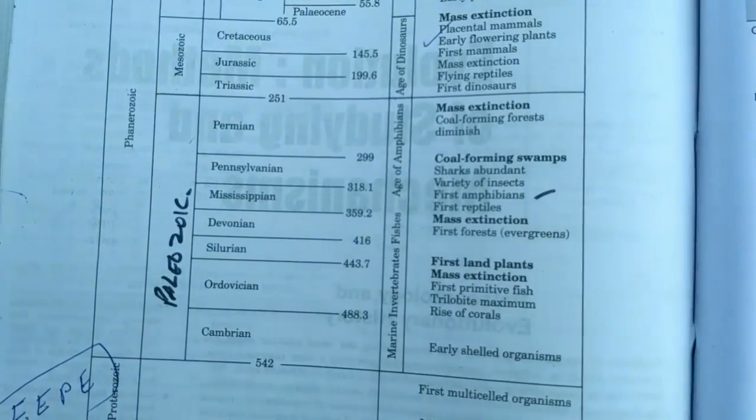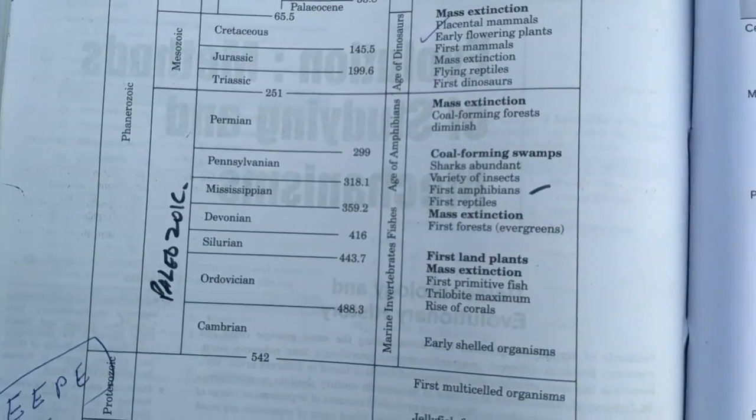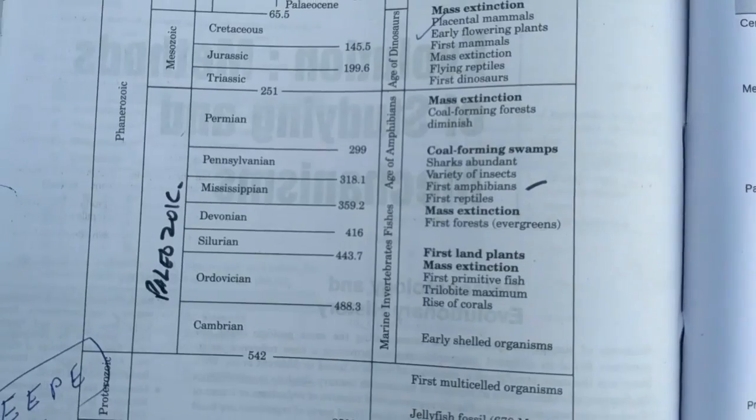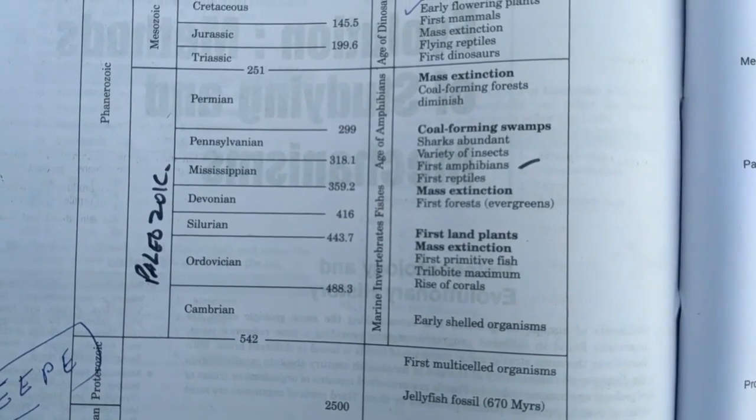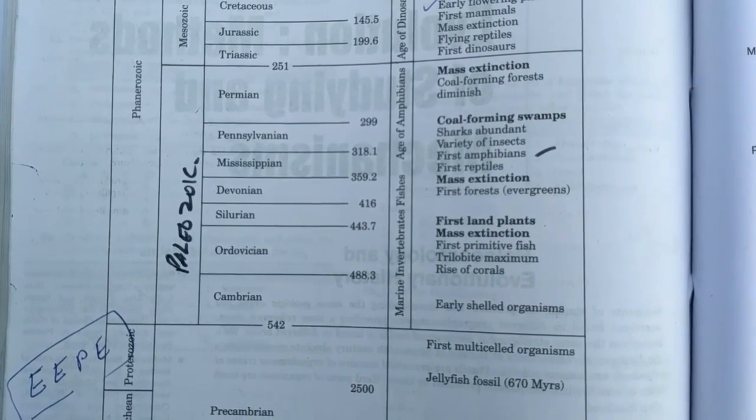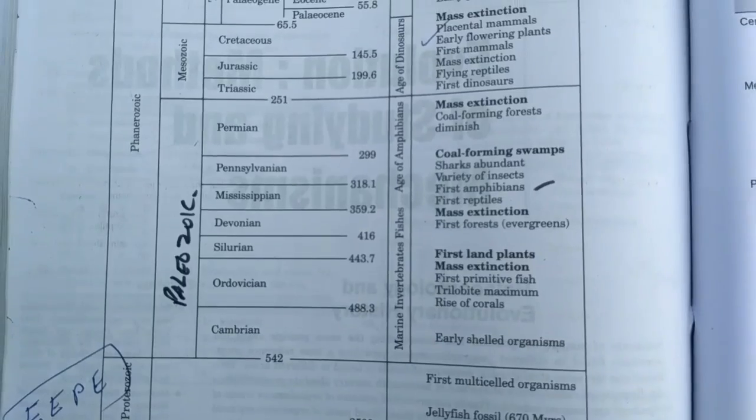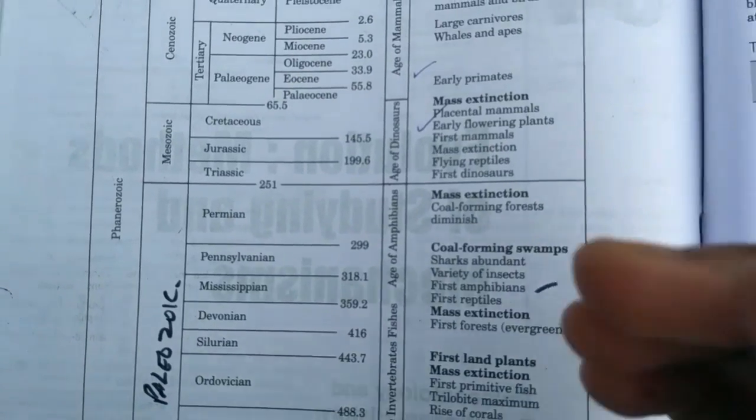Mass extinction also occurred in Permian. Coal-forming forests diminished, so these life forms are extinct in the Permian. It can be regarded as the time of marine invertebrates, fishes, and amphibians. Up to the Cambrian and Permian, amphibians flourished well.